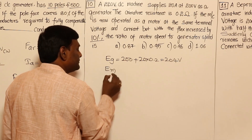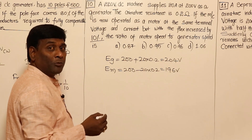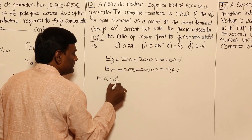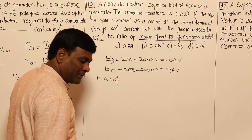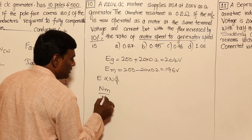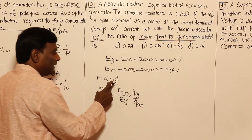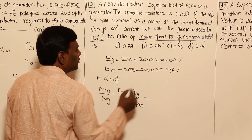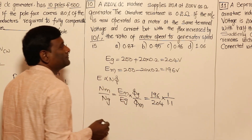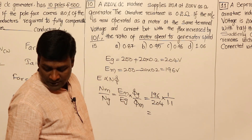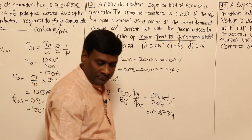For the motor: E_m = V_t − I_A × R_A = 200 − 20 × 0.2 = 196 volts. Since E is proportional to N × φ, the ratio N_motor / N_generator = (E_motor / E_generator) × (φ_generator / φ_motor) = (196 / 204) × (1 / 1.1) = 0.8734, approximately 0.87.